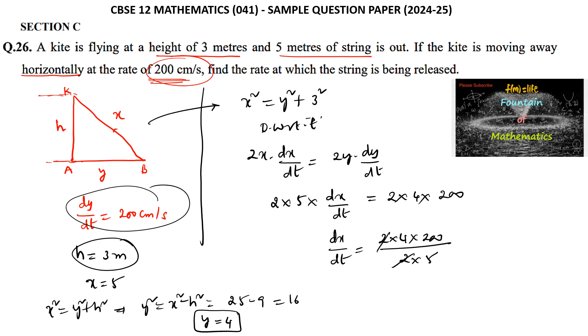Simplifying: 40 × 4 = 160, so dX/dt = 160 cm/s. This means the rate at which the string is being released is 160 centimeters per second.